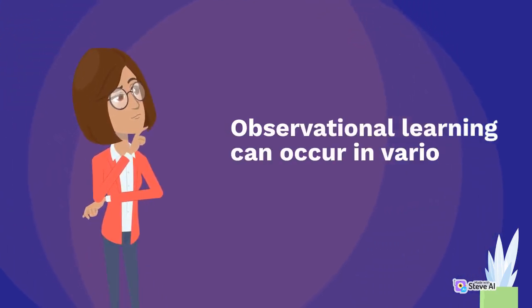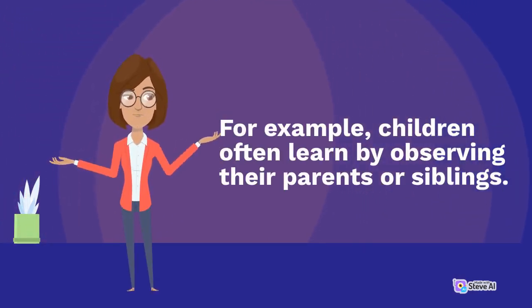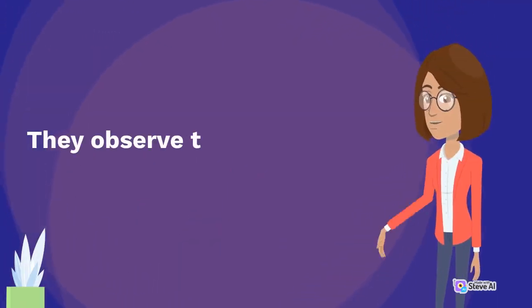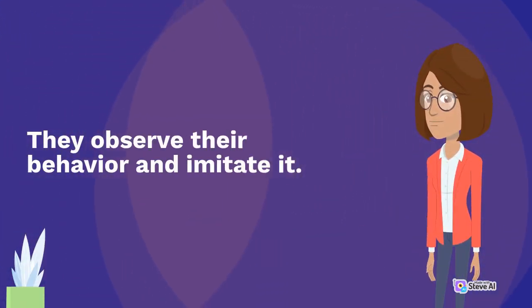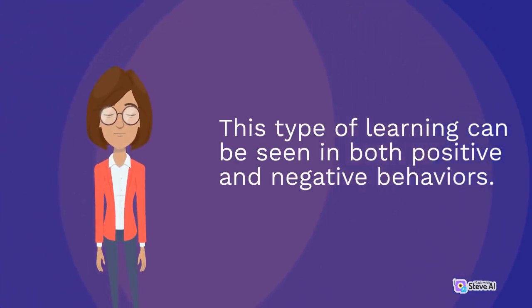Observational learning can occur in various contexts. For example, children often learn by observing their parents or siblings. They observe their behavior and imitate it. This type of learning can be seen in both positive and negative behaviors.